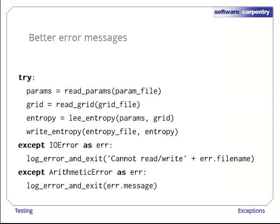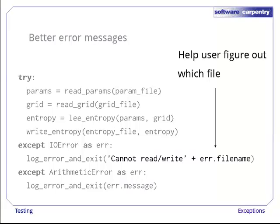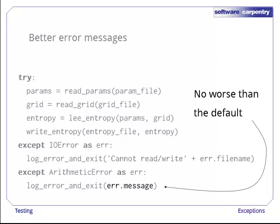Now let's go back and create better error messages. Here's the modified code. And here are the changes. In the case of an IOError, we print out the name of the file that caused the problem. And in the case of an ArithmeticError, printing out the message embedded in the exception object is what Python would have done anyway.